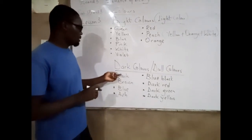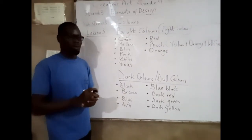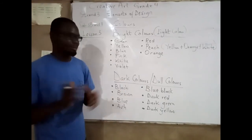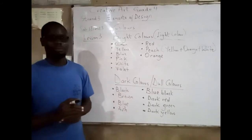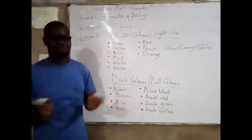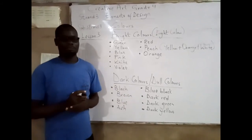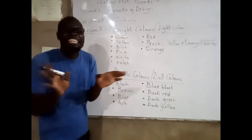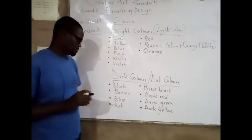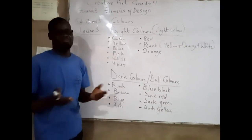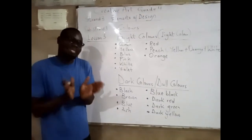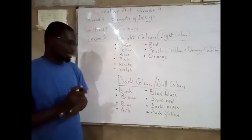Now, dark colors or dull colors. Those colors are very dull. For example, black — black is not too attractive, it's so dark. Let's look at another one: brown. People also like brown, but it's very dark.